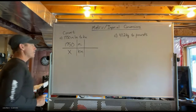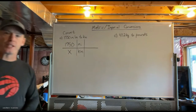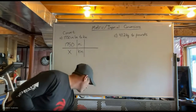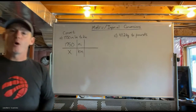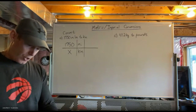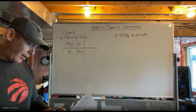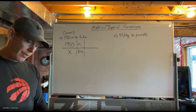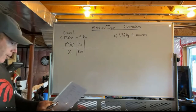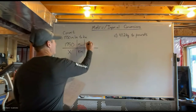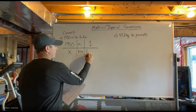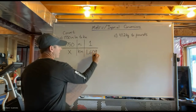I want to know how many kilometers that is. This is where I go to my conversion sheet to find the relationship between miles and kilometers. I look under the length section for metric and imperial, and at the bottom it says one mile is 1.609 kilometers.